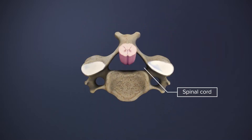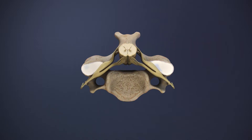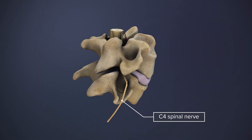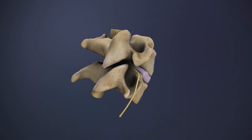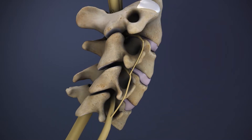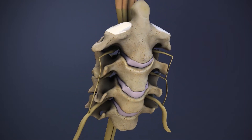The spinal cord lies within the vertebral foramen, a space formed by the vertebral arch and the vertebral body. A spinal nerve branches out from the spinal cord and exits on each side through the intervertebral foramen. Each pair of nerves innervates a specific region of the body.